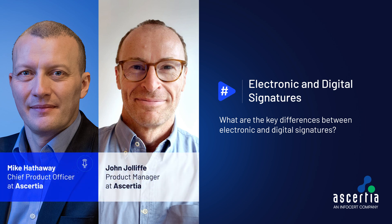Enter digital signatures. This term is probably the single most confusing thing about e-signatures, because what's electronic has to be digital, right? Well, wrong — because here the word digital is used differently, to refer to the technology used to generate the signature. With digital signatures, the signer's identity is bound to the document using something called a digital certificate. The certificate is issued to the signer by a trusted source — someone who can vouch for their identity — that could be an employer, or a regulated third party known as a trusted service provider or a certification authority. The signer then uses their digital certificate to cryptographically bind their signature, containing proof of their identity, to the document.